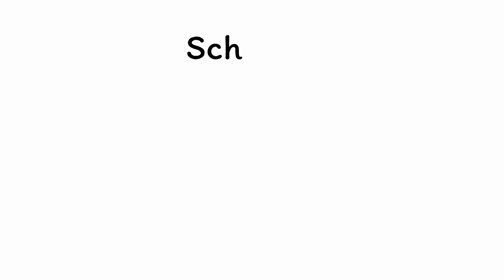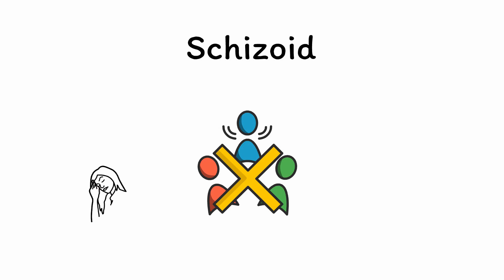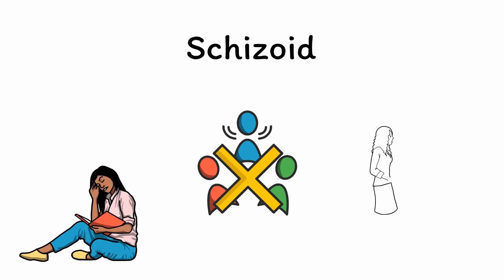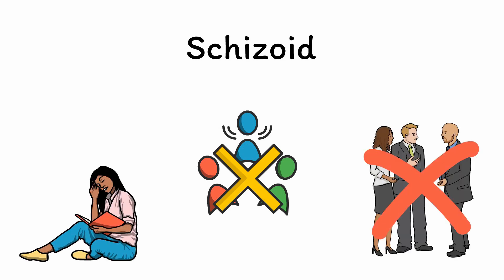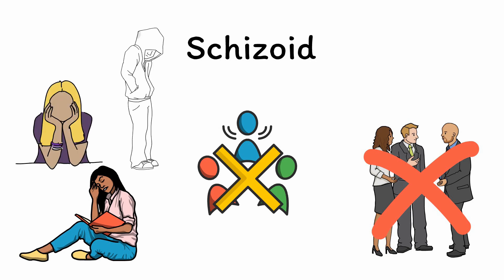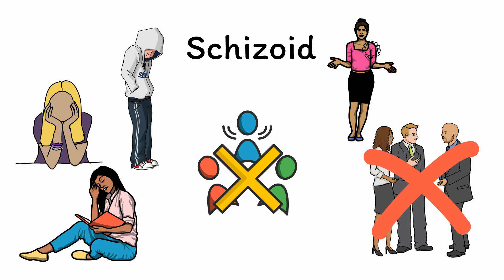Next, schizoid personality disorder is characterized by a consistent lack of interest in social relationships. This manifests through a preference for solitary activities, a disinterest in seeking new relationships, difficulty with experiencing pleasure, a lack of close confidence, an indifference to praise or criticism from others, an emotional coldness or aloofness when interacting socially, and often an estrangement from family and friends.